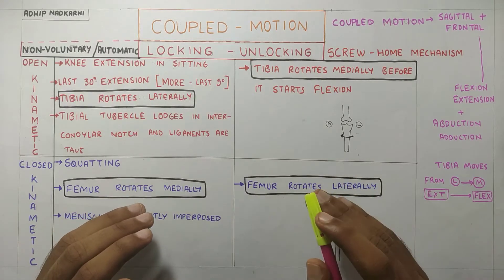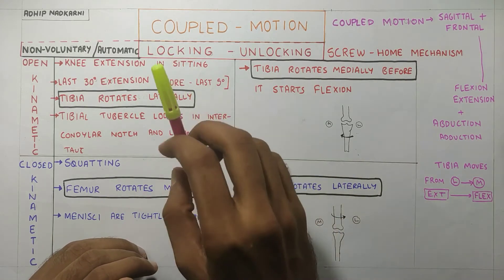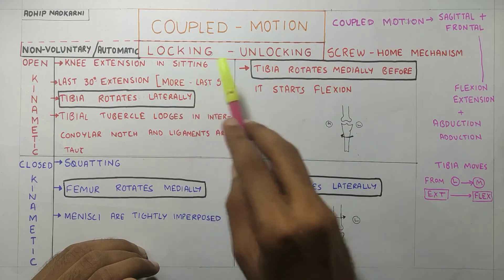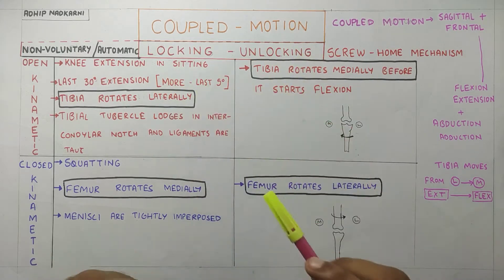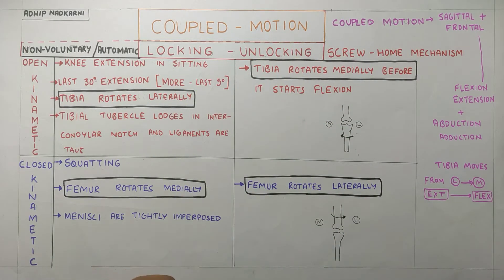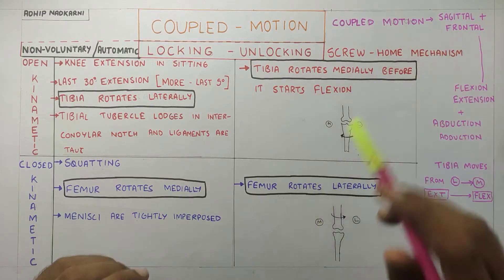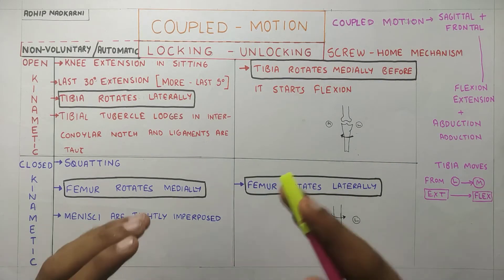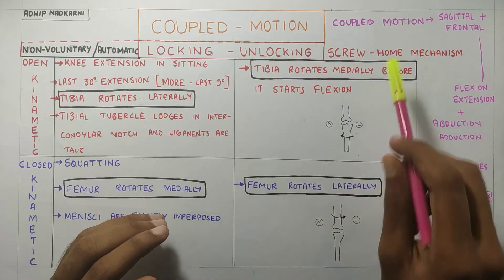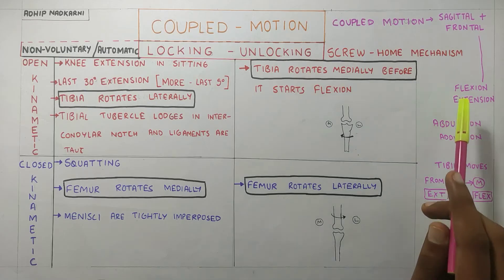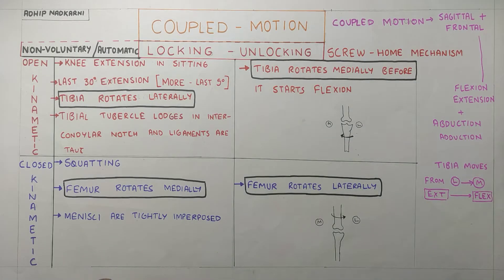In this video, we are going to cover coupled motions and locking and unlocking of the knee joint. Under coupled motion, there is sagittal and frontal plane motion that occurs at the knee joint. That is, in the sagittal plane there is flexion and extension, and in the frontal plane there is abduction and adduction.